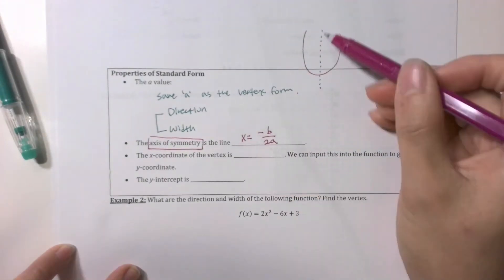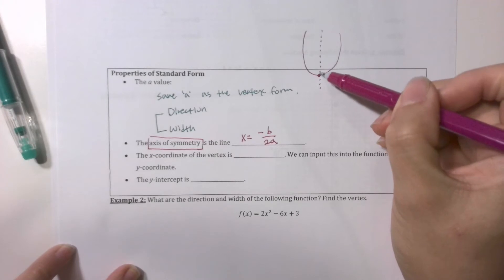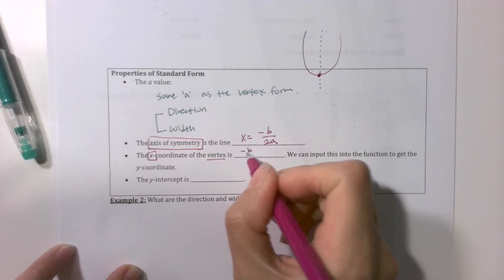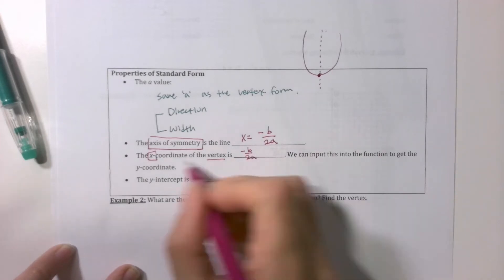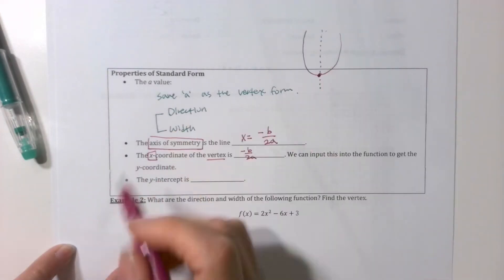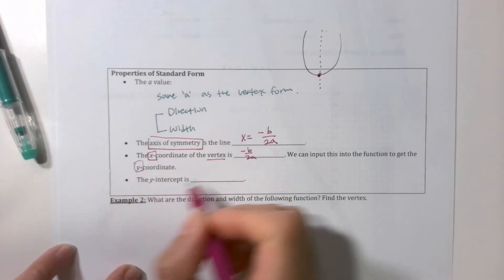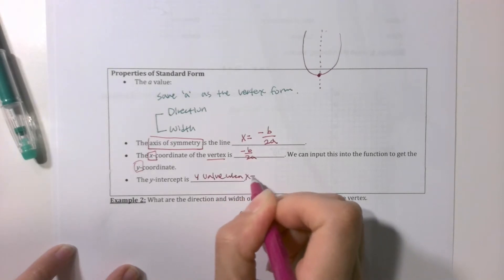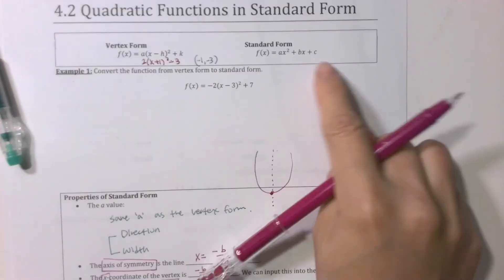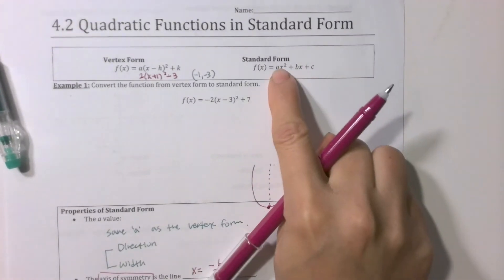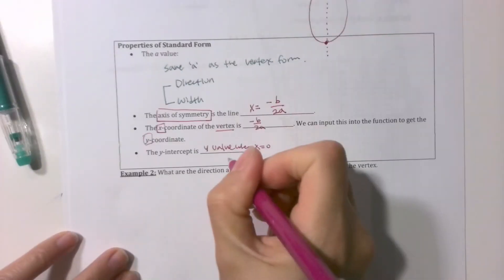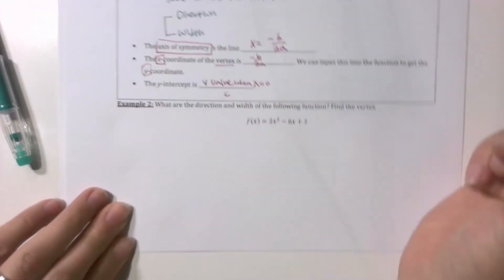Do you notice that the axis of symmetry x value is going to be the same as the x value of the vertex? So the x coordinate of the vertex is going to be the same, -b/(2a). And once you find the x value, you're going to plug that back to the function to find the y value after that. And the y intercept is going to be the y value when x = 0. Technically, if it's in the standard form, if I plug 0 into x, that disappears, that disappears, so you're only left with the c. So you can say it's going to be c in the standard form.